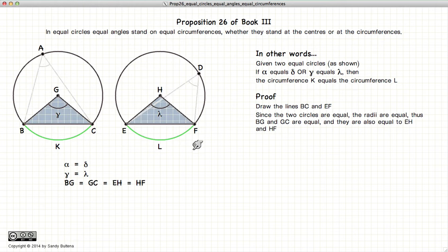Now, if we look at the triangles BGC and EHF, the lines BG, GC, EH, and HF are radii of equal circles, and consequently are all equal to each other.